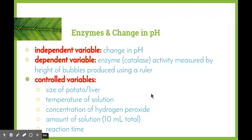Firstly, enzymes and change in pH. We're changing the pH, so this becomes our independent variable. The dependent variable is measuring the enzyme activity. The particular enzyme that we will be using is catalase. We'll be measuring the enzyme activity by looking at the height of bubbles produced using a ruler. Some of the control variables that we need to use are the size of the substrate that we use, which in this case will either be potato or liver, the temperature of the solutions, the concentration of the hydrogen peroxide, the amount of solution, and the reaction time.